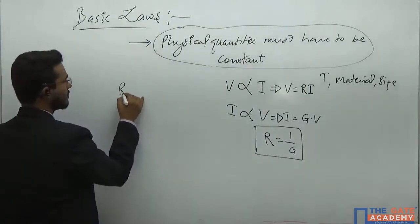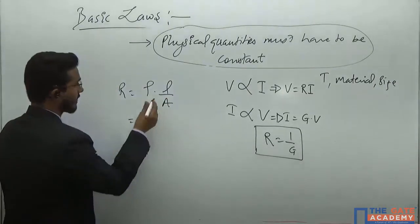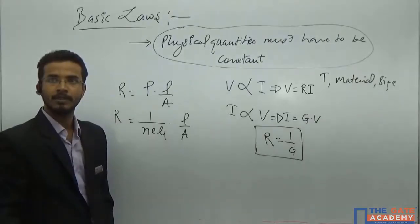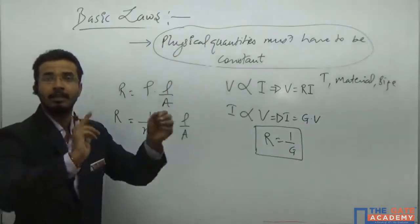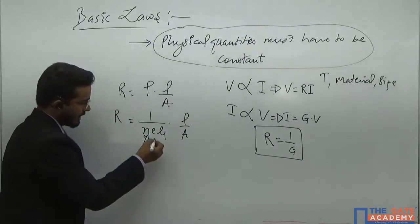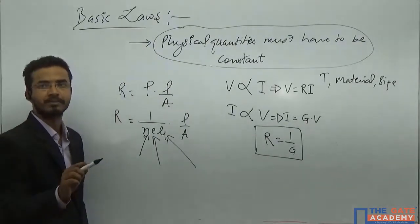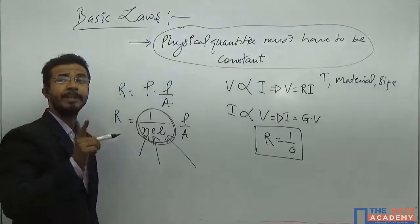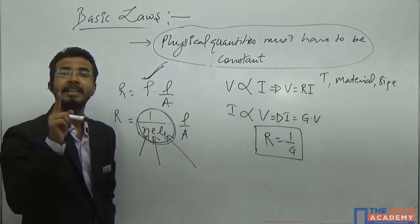We know that R equals rho times L by A, and you can write rho as 1 upon (n·e·mu) times L by A. The person who has studied EDC can correlate this easily, because n·e·mu is the conductivity of the material. In any particular material, number of free electrons density will be fixed, electronic charge will be fixed, and mobility (mu) of the charge carrier will also be fixed for each material. This term is independent of size, that is why it is known as resistivity — which is material dependent, not size dependent.